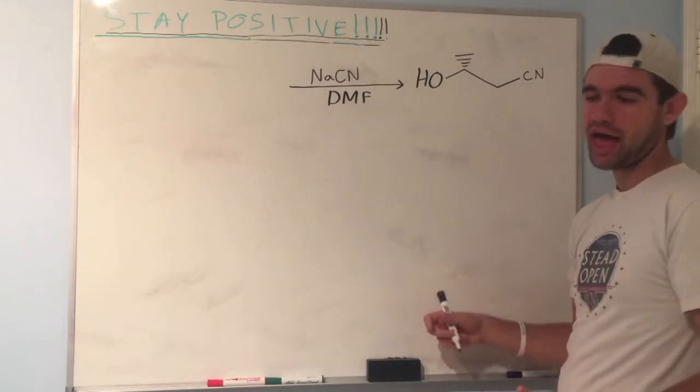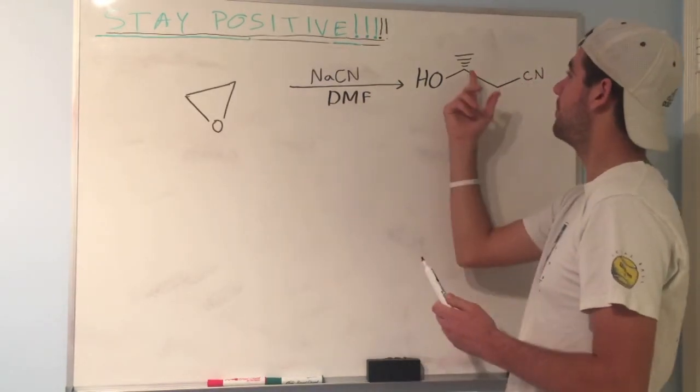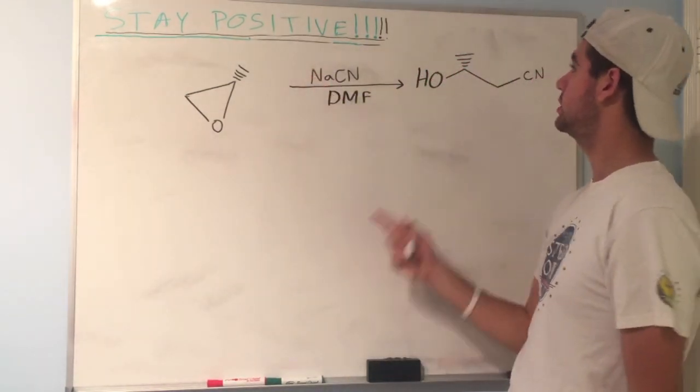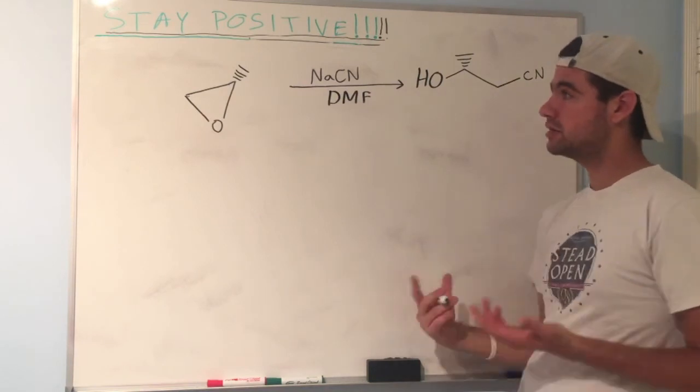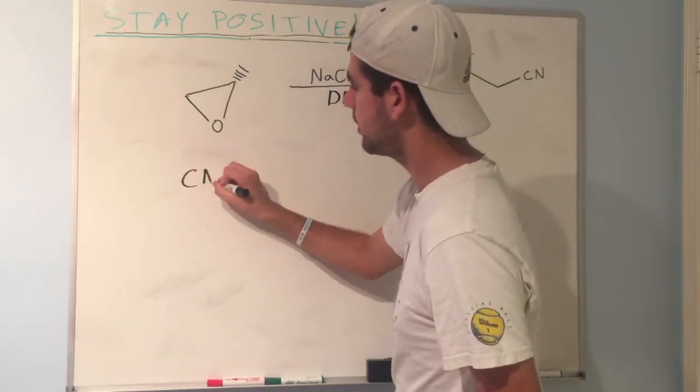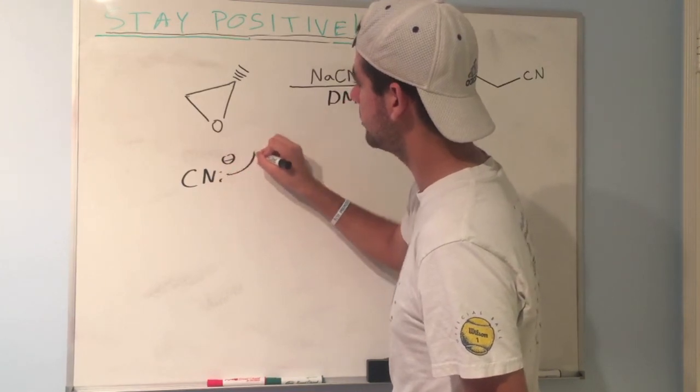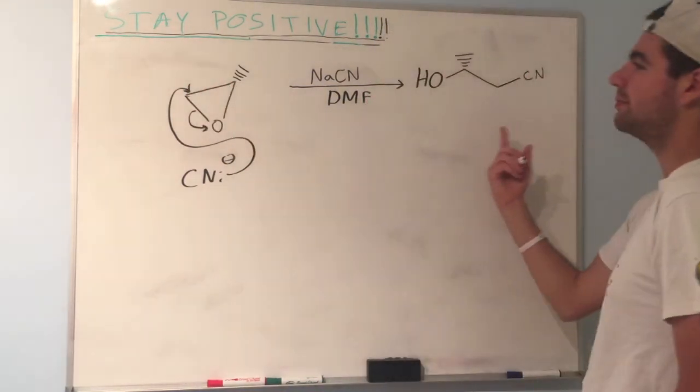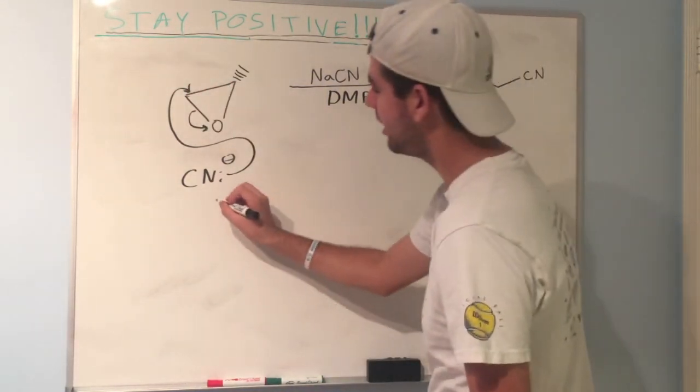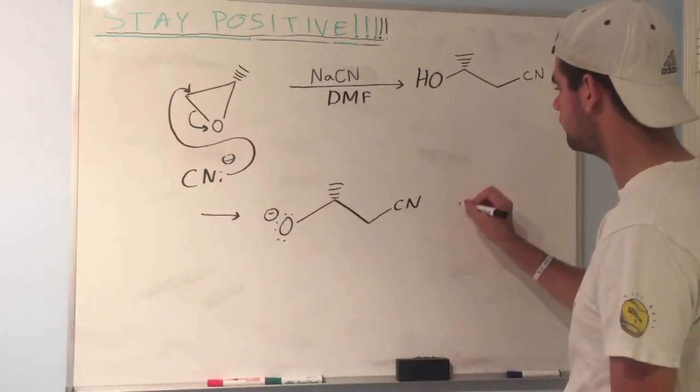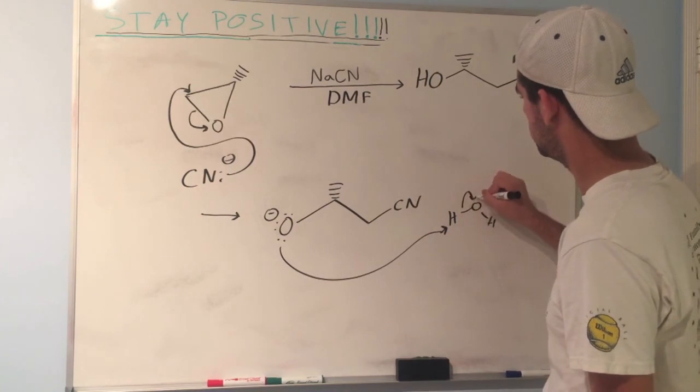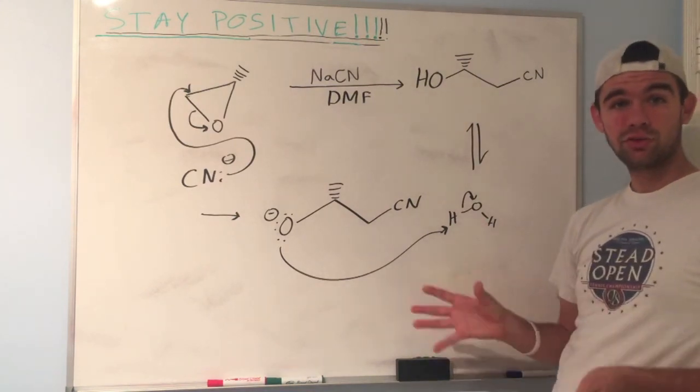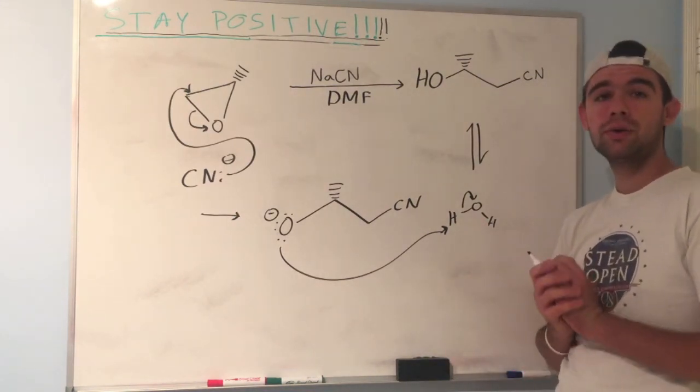We're good - this, given these conditions, will become this. Just for fun, we could draw the mechanism just to be sure. We'd have CN minus going around in solution attacking the less substituted carbon right here, opening up that epoxide ring and forming this minus the hydrogen. Then that would get protonated with water and give us our answer. I hope that wasn't too bad - that's another retrosynthesis problem. Epoxide reactions typically aren't too bad, not too tricky. So I hope this video was really helpful.